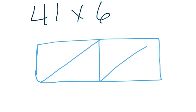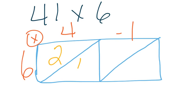Since we have a box and 41 is a 2-digit number, we only need 2 boxes. So 4, 1, and 6. Multiplication symbol on the side. So now 6 times 4 is 24. 6 times 1 is 6.